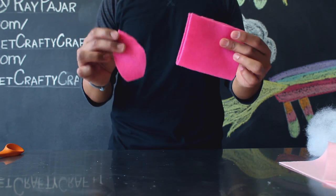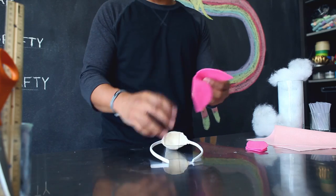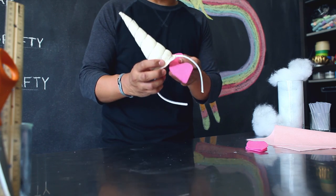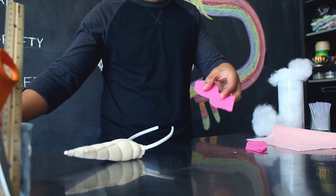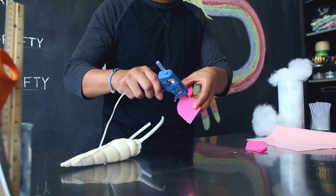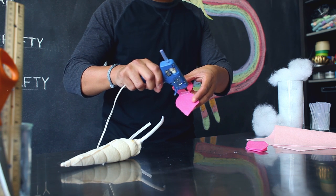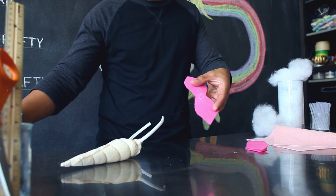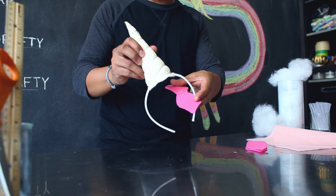Go ahead and make two identical pieces. After you've made your two pieces, you're going to apply it to your horn. The best way to do this is to first take some hot glue and place it on the fold of your ears and then glue it onto your headband.